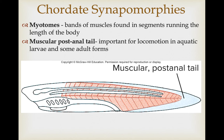This also includes a muscular post-anal tail — so past the anus, which is seen in this diagram here, we have a supported and muscular tail structure past that point.